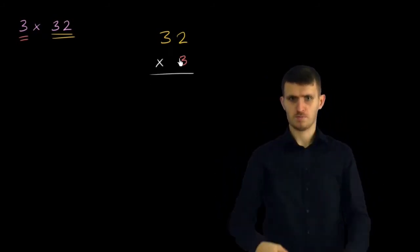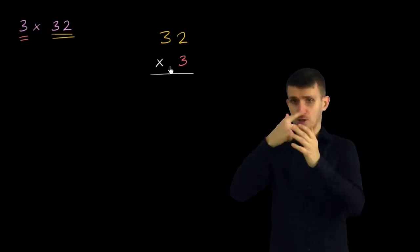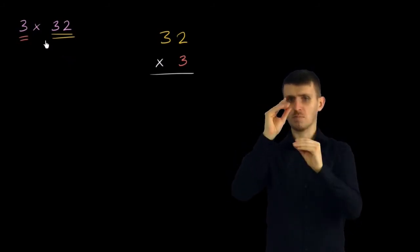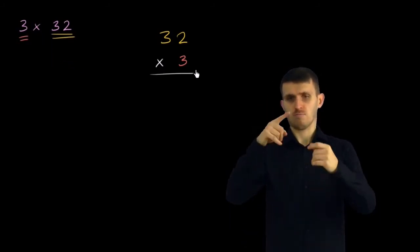And this is essentially a way of saying the same thing. You could read this as 32 times 3. But 32 times 3 is the exact same value as 3 times 32. It doesn't matter what order you multiply in. Now let's try to compute it.